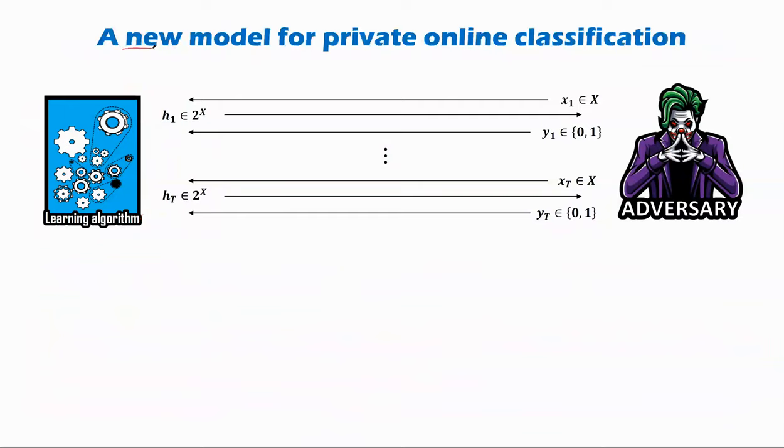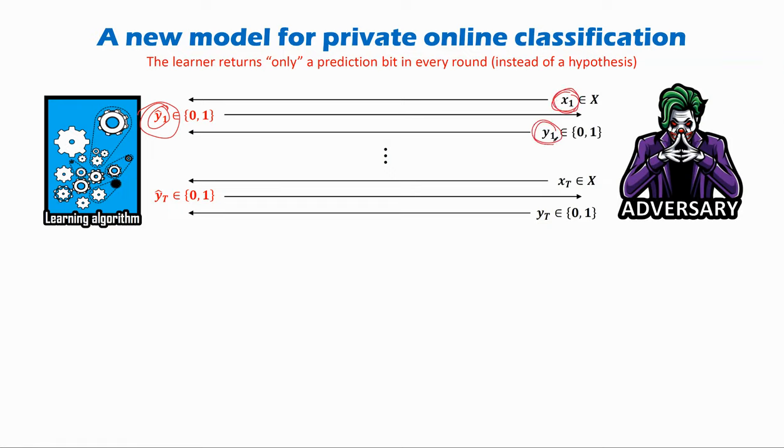So what happens in the new model we propose in this work? The change is that instead of releasing a hypothesis, a complete hypothesis or a complete model in every iteration, we only return the predictions. The adversary still gives us a data point in every round. We respond with just one bit, what we think is the predicted label of that point, and then the adversary tells us the correct label.